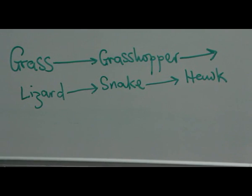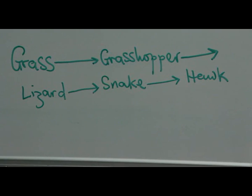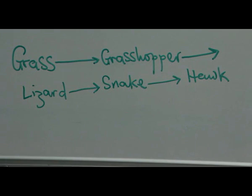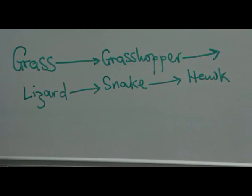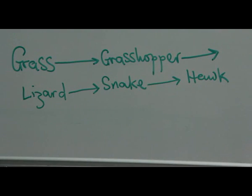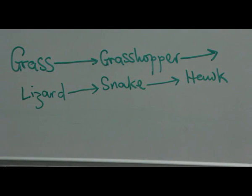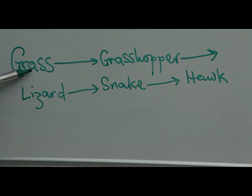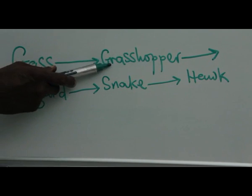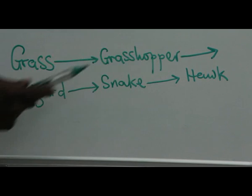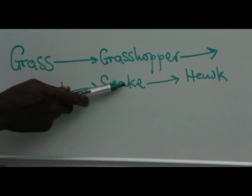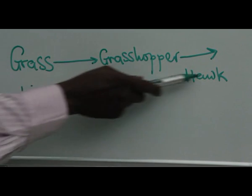For limit of space, we have to break the chain. Otherwise, it's supposed to be in a linear form — a straight line. From our definition, energy is flowing from grass to grasshopper, and it flows from grasshopper to lizard, from lizard to snake, and snake to hawk.